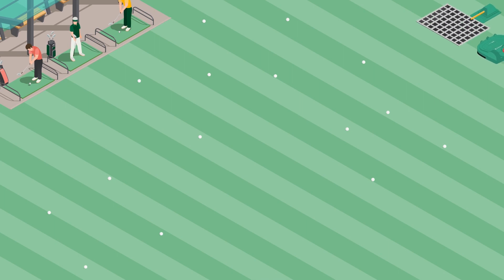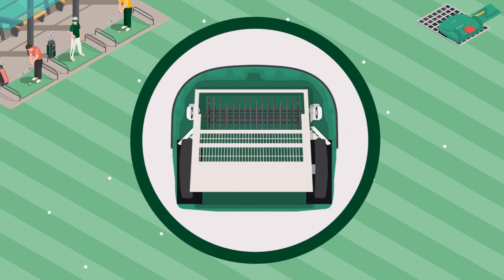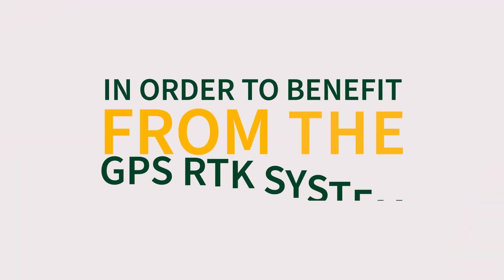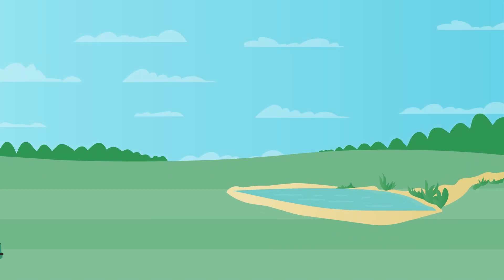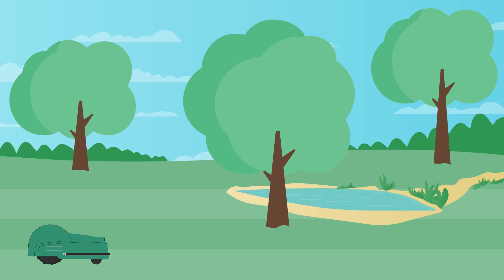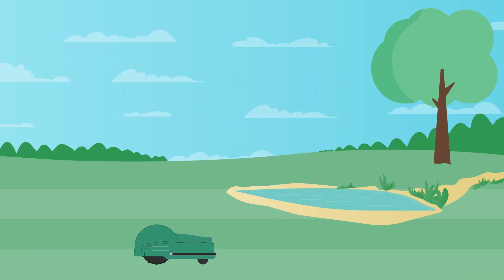Once they have accomplished their mission, these robots head to the drop pit where they dump their load. In order to benefit from the GPS RTK system, your land must meet certain criteria and not have too many trees. A good Wi-Fi signal is necessary, as well as the installation of an RTK terminal or a 4G connection.